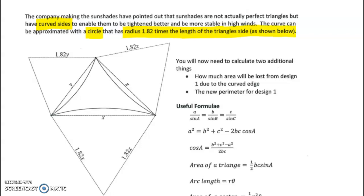Reading carefully, we now have to figure out how much area we're going to be losing from design one due to the curved edge. We don't have to do it for both of them - that's going to save you a ton of time. Then we have to work out the new perimeter for design one.